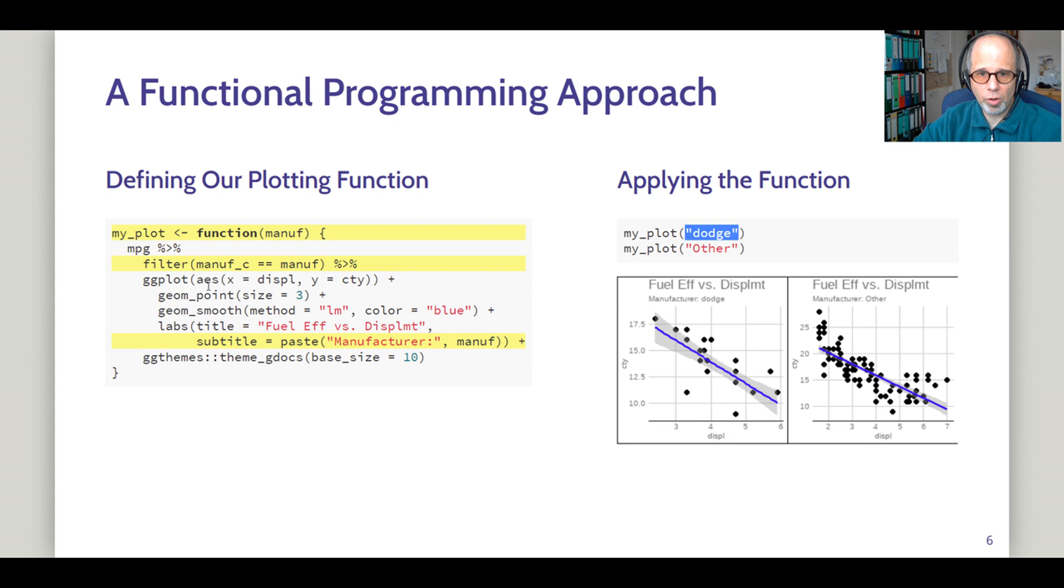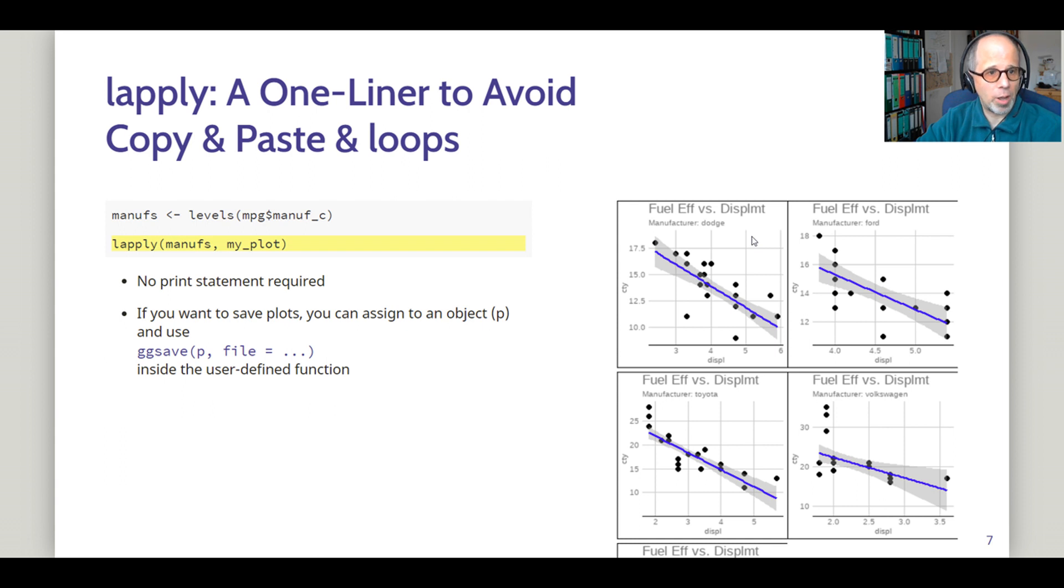So now using this functional approach we can write one line of code, a very simple short line of code to create each plot for each manufacturer. But we want to boil that down to a one-liner to create all the plots. And we do that now using lapply.